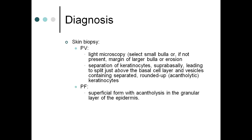Diagnosis of all types of pemphigus begins with skin biopsy. In pemphigus vulgaris, light microscopy of a small bulla (or margin of larger bulla or erosion) reveals suprabasal separation of keratinocytes — a split just above the basal cell layer — with vesicles containing rounded-up acantholytic keratinocytes. In pemphigus foliaceous, acantholysis occurs in the granular layer, which is why vesicles are not seen — only crusted erosions.